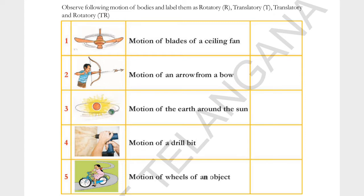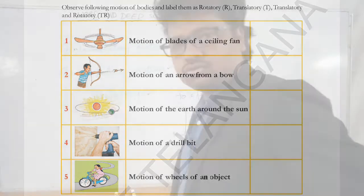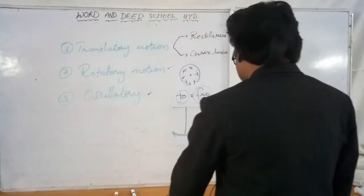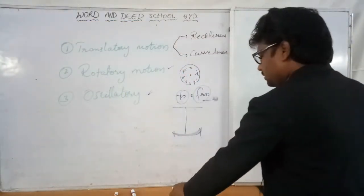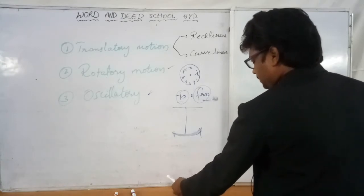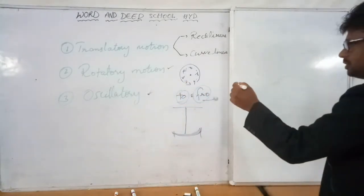So there are various examples given to understand the types of motion. You can go through the textbook and you will easily understand them. Now let me write the definition of rotatory motion.